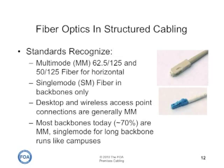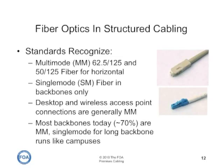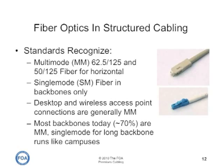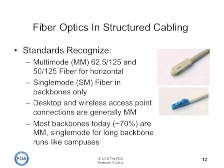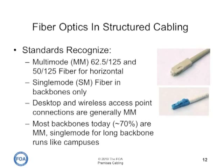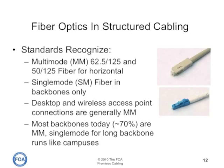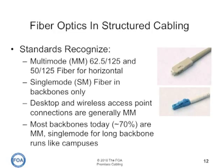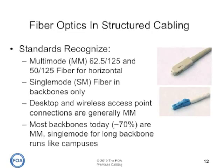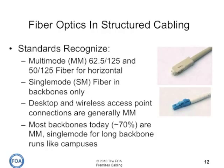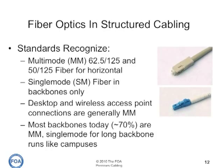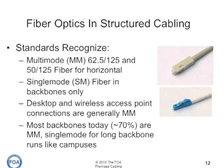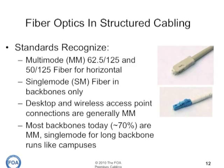Structured cabling systems can either use multi-mode fiber in the backbone or the horizontal, or single-mode fiber in the backbones only. The desktop and wireless access point connections are generally done on multi-mode fiber. Most backbones today — more than 70% — are multi-mode fiber, with single-mode fiber being used for long backbone runs, like campuses. Most connections are done with either SC connectors, shown on the top as the beige connector, or LCs, the smaller connector, shown in blue below.